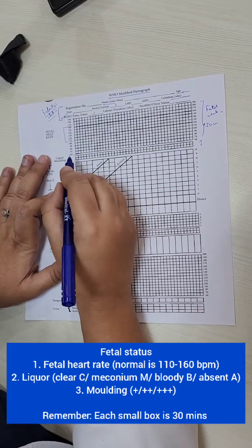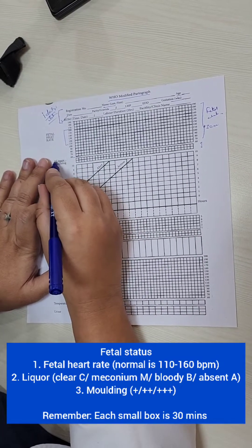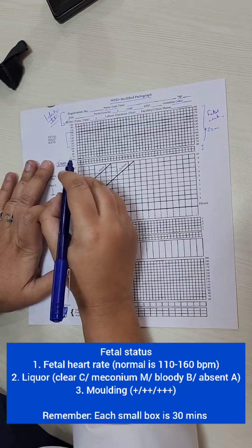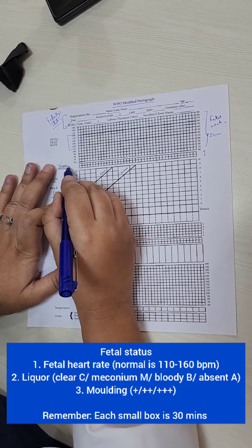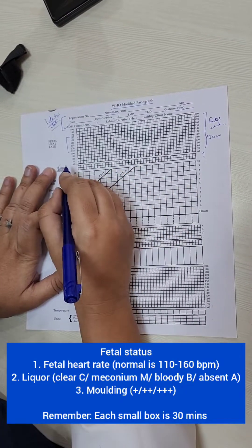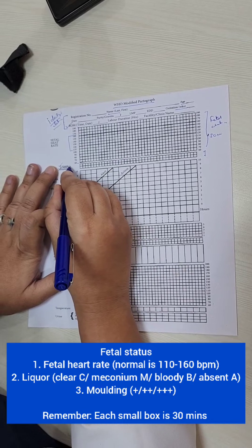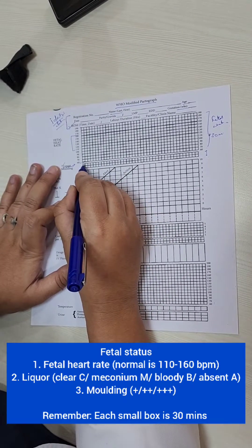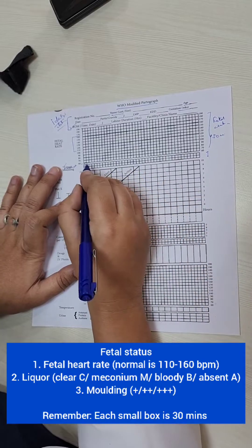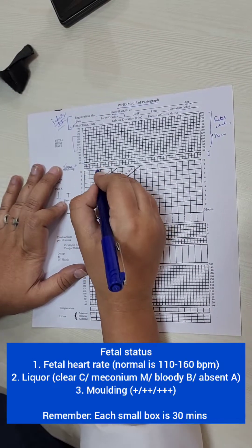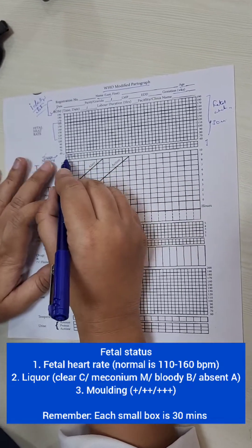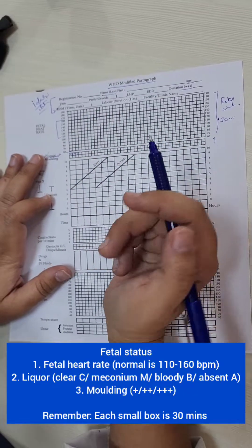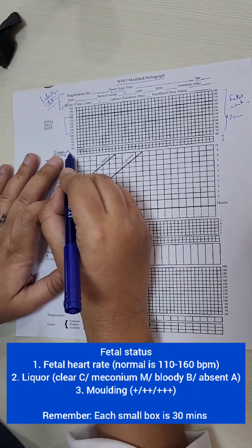Similarly the next box is also for the fetal status, that is the amniotic fluid. So if the amniotic fluid is clear, this has to be documented once the membranes have been ruptured. So if the amniotic fluid is clear we write here C. So whenever we examine the patient, after half an hour we check her pad and we see what the color of the amniotic fluid is.